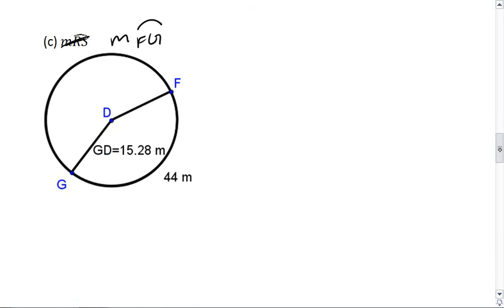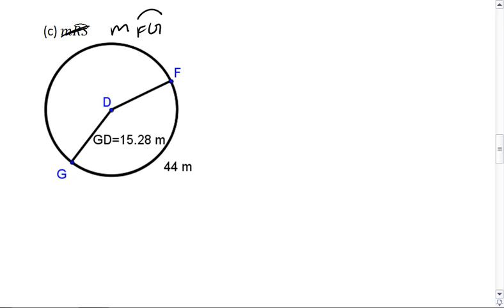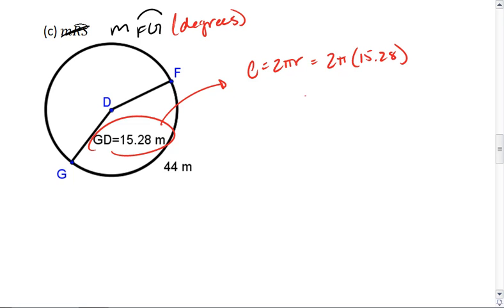How about problem C? I want to find the measure, so this is in degrees, of arc FG. This one's a little trickier. First thing I want to do is use this radius to find the circumference. I know circumference is 2πr, so 2π times 15.28, which gives me approximately 96.007 meters.